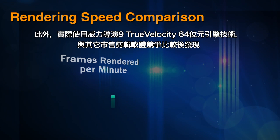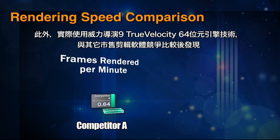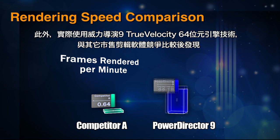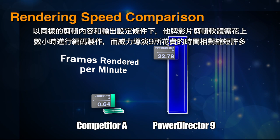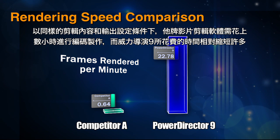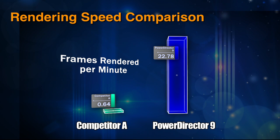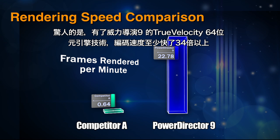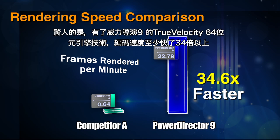We put PowerDirector 9's True Velocity 64 to the test against other consumer video editing software. While competing video editing software can take hours to render a video, PowerDirector takes a fraction of the time for the same task. With PowerDirector 9's True Velocity 64, you can render up to 34 times faster.